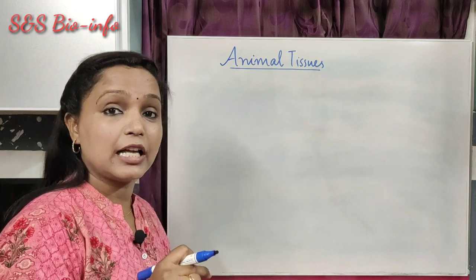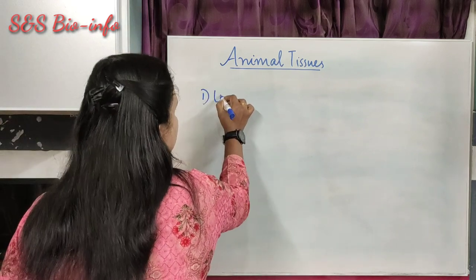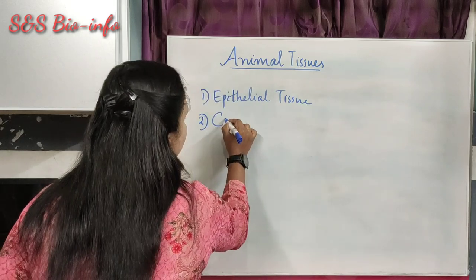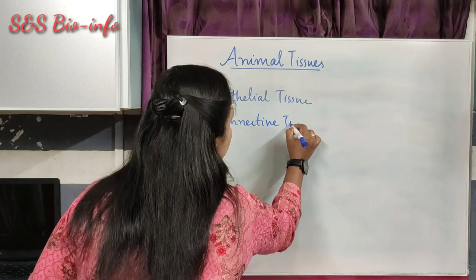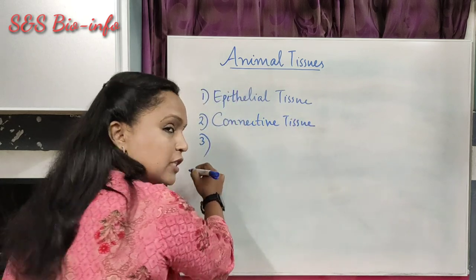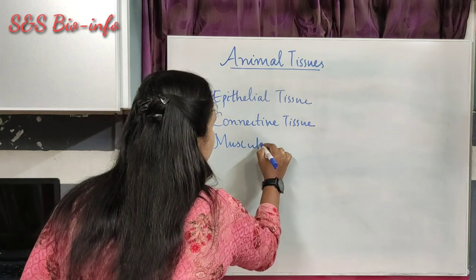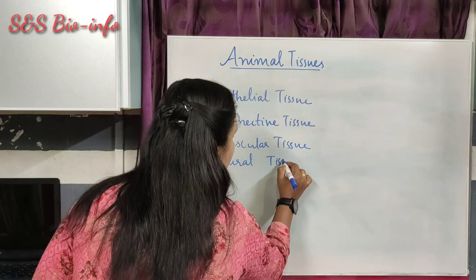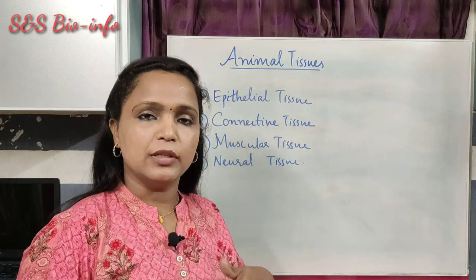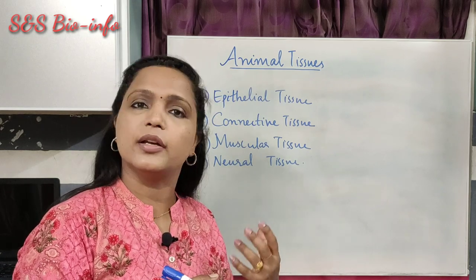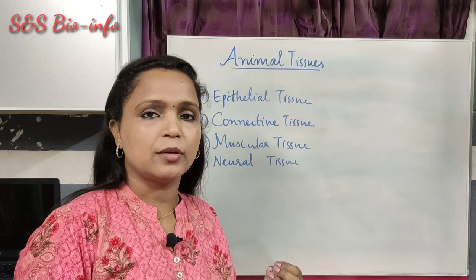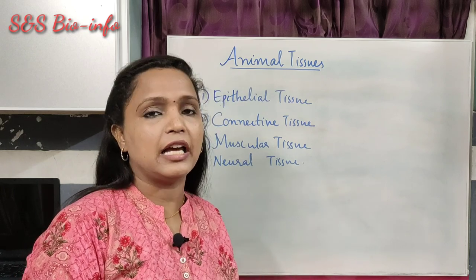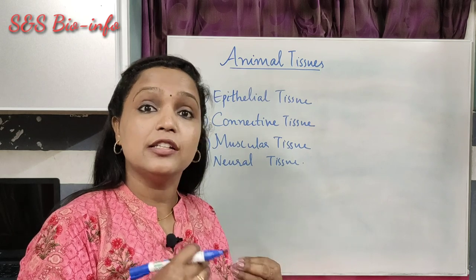Animal tissues are broadly classified into four types: epithelial tissue, connective tissue, muscular tissue, and neural tissue. The body of complex animals is made up of various tissues, organs, and organ systems. Each organ and organ system has a specific function. These functions are performed with the help of specialized animal tissues.